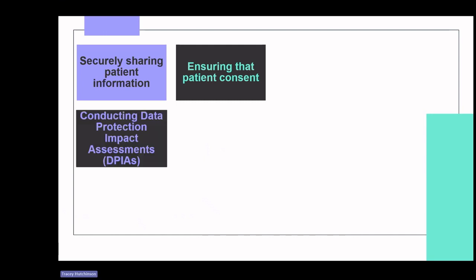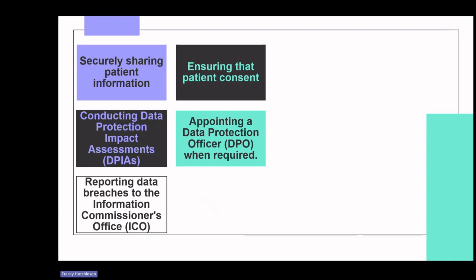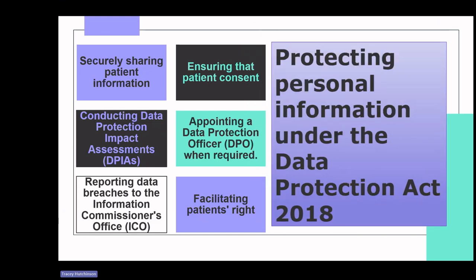It is important to conduct data protection impact assessments for high-risk processing activities. This also involves appointing a Data Protection Officer or DPO when required, monitoring the organisation's compliance with data protection obligations, and supporting and advising on specific data protection issues, as well as assessing the risk attached to specific projects by overseeing data protection impact assessments. It also covers reporting data breaches to the Information Commissioner's Office and, in certain cases, to affected individuals, and facilitating patients' right to access their medical records.